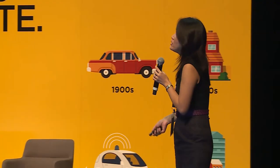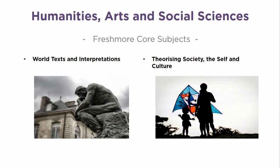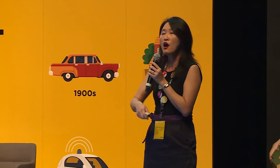This is where the SUTD curriculum and its 22% focus on humanities, arts, and social sciences is a very powerful ingredient in your engineering education. In the HASS program, we give equal focus to humanities and social sciences. In your first year — your freshman year — you will actually be taking one mandatory course on World Texts and Interpretations, which focuses on fundamental texts from around the world that have shaped civilization as we know it.